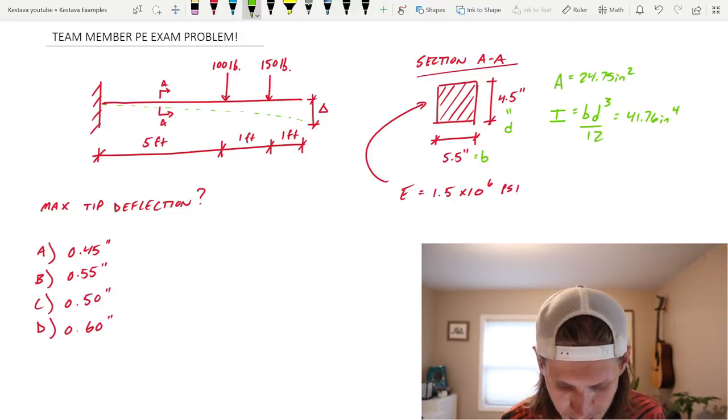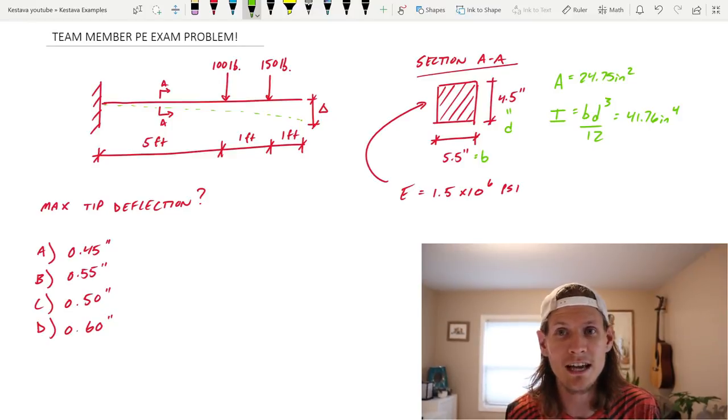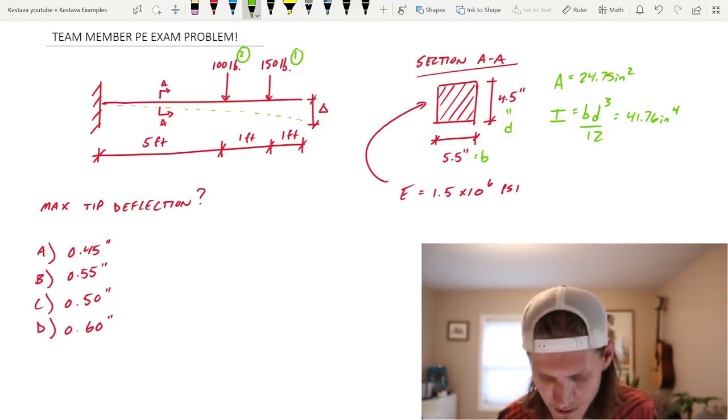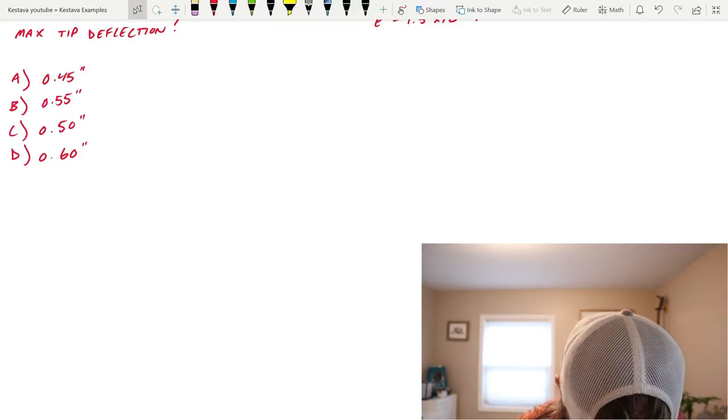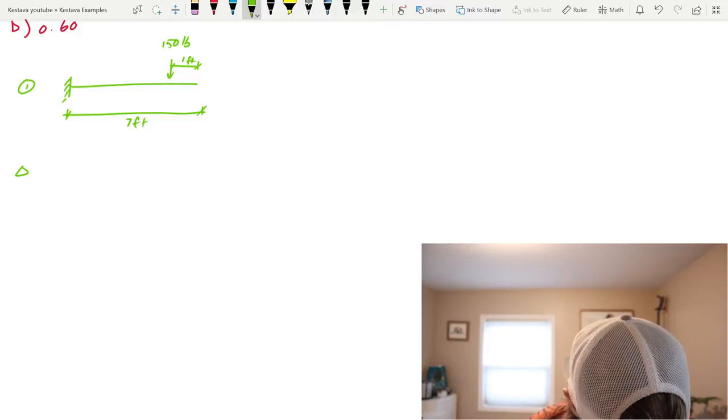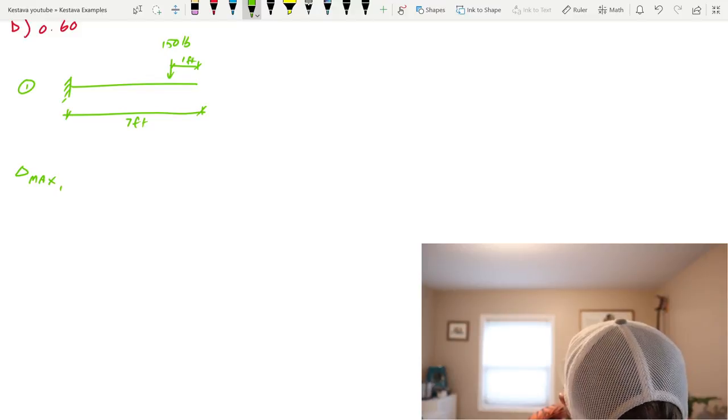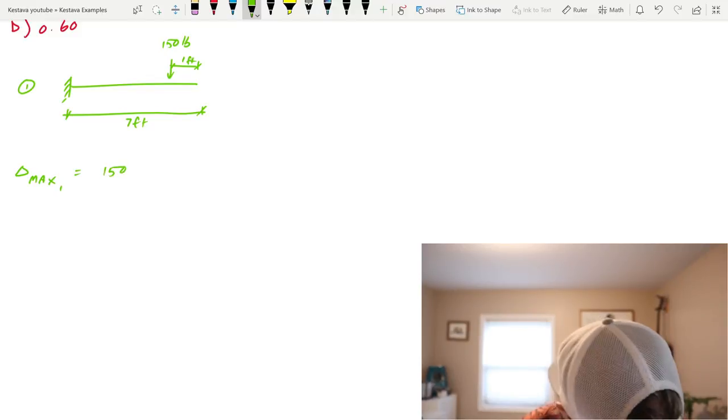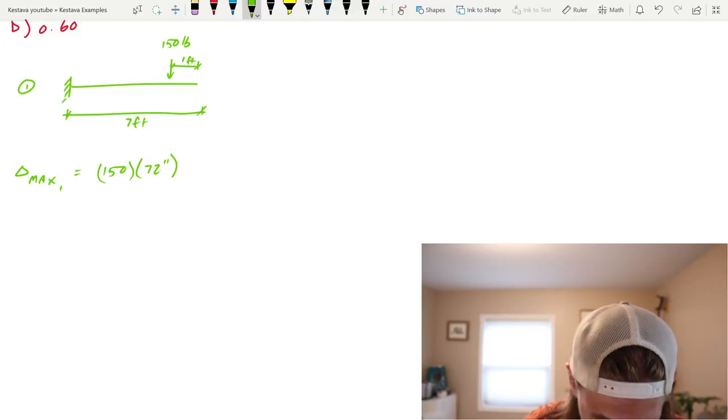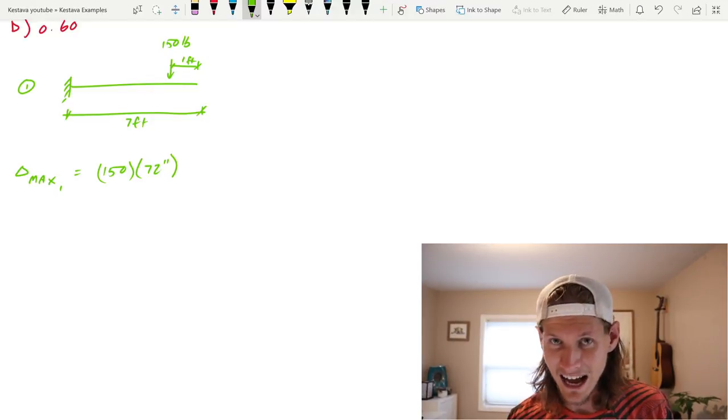We're going to split both load conditions into two separate beam examples and then add the deflections together at the end. This is going to be condition one, the 150 pounds, and condition two is going to be the 100 pounds. We want to know max deflection at the tip for case one. And we know that case one is this example. Per the ACI manual, max tip deflection one is equal to 150, because that's P, times 72, because that's inches.